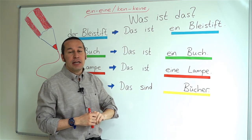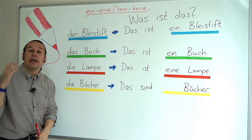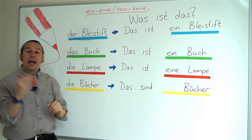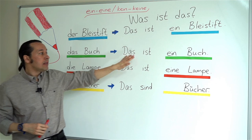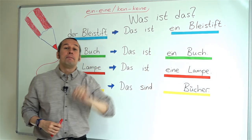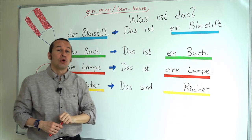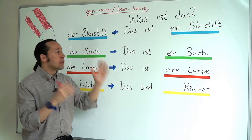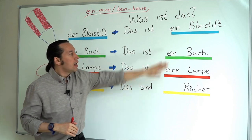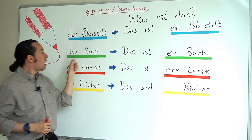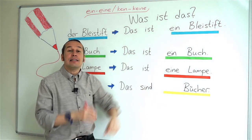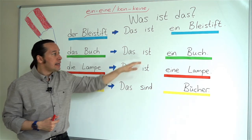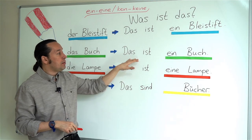When I say 'this is a book' — book is das Buch — I say: Das ist ein Buch. If I would mention a specific book, I need to put the article 'das': Das ist das Buch — a specific book. But here I mention just 'a book', so: Das ist ein Buch — this is a book.